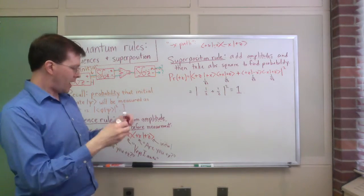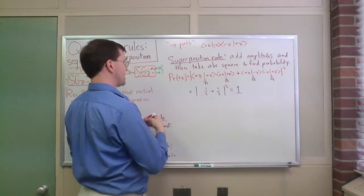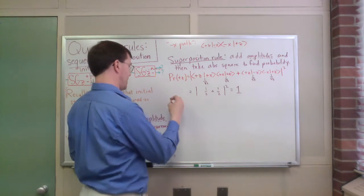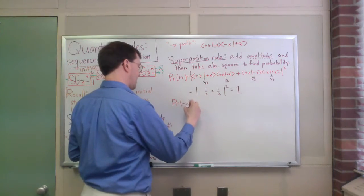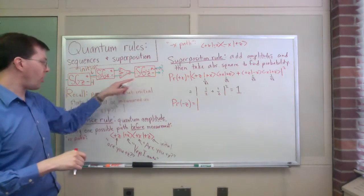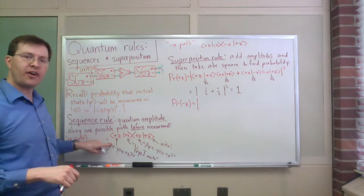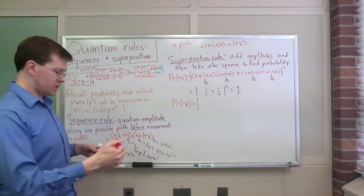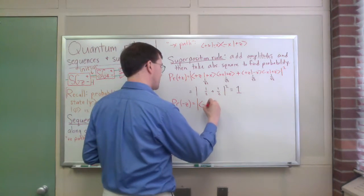On the other hand, I could have asked, what's the probability of being in the minus, of measuring minus z at the end? Let me write that down. For that, I would have done exactly the same story all along the way, except at the very end, instead of asking, are you plus z, I would have asked, are you minus z? So, it would have looked very much the same, except my very last step would be the minus z.